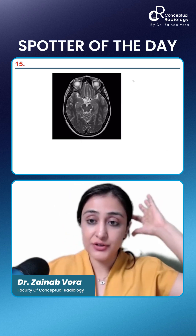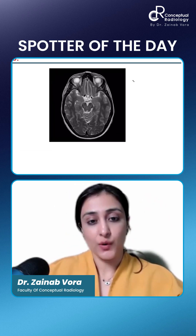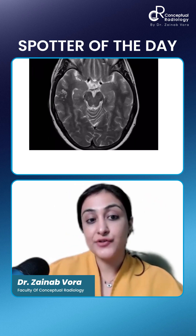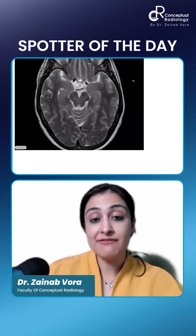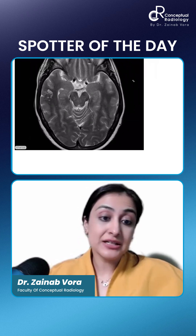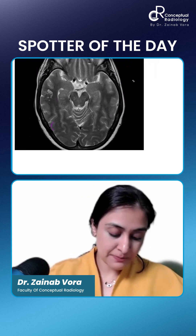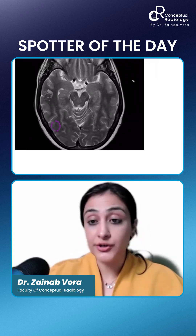One of you saying DNET, one of you saying MVNT. So, what would be the first differential diagnosis? How is DNET? DNET is typically cortical based — it is an expansile cortical neuronal tumor.